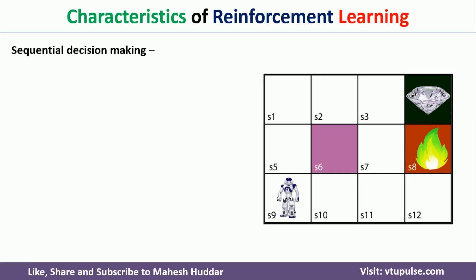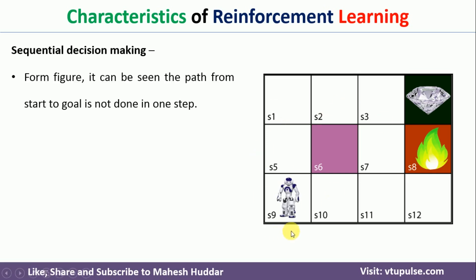The very first characteristic of reinforcement learning is sequential decision making. In this case, there are different states. The robot is present in state S9, S6 is an obstacle, S8 is a danger, and there is a goal state. The agent has to go from S9 to this particular goal state.